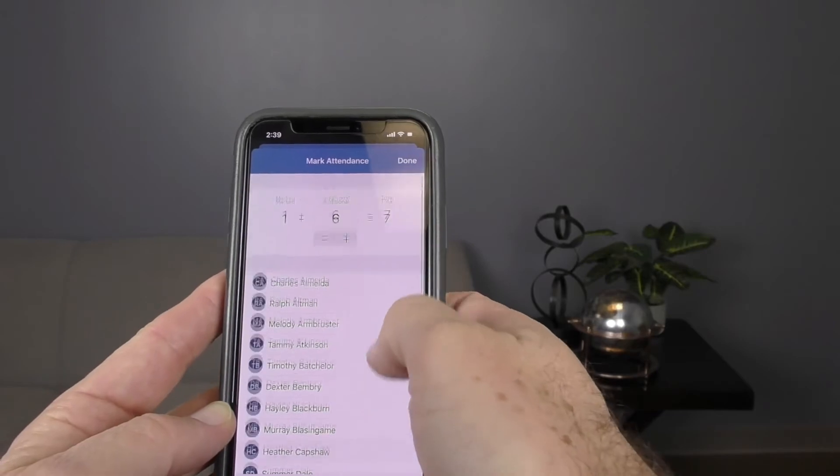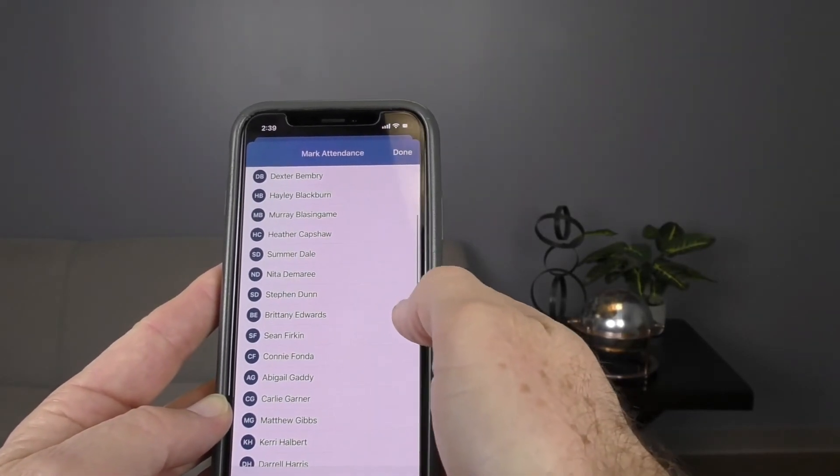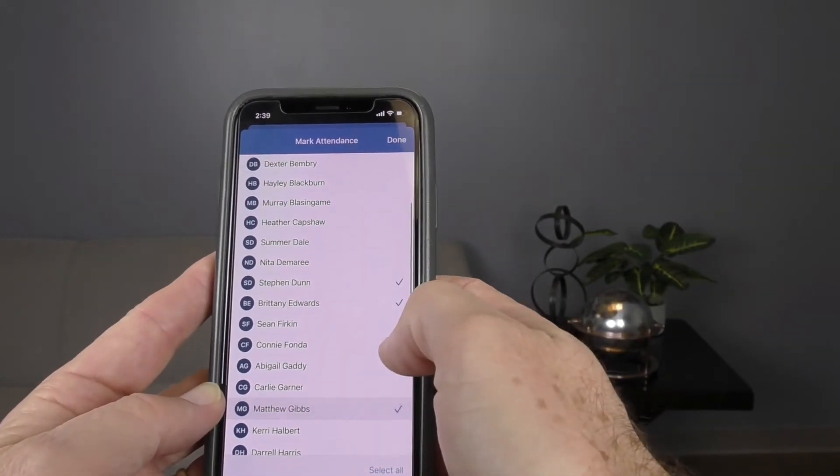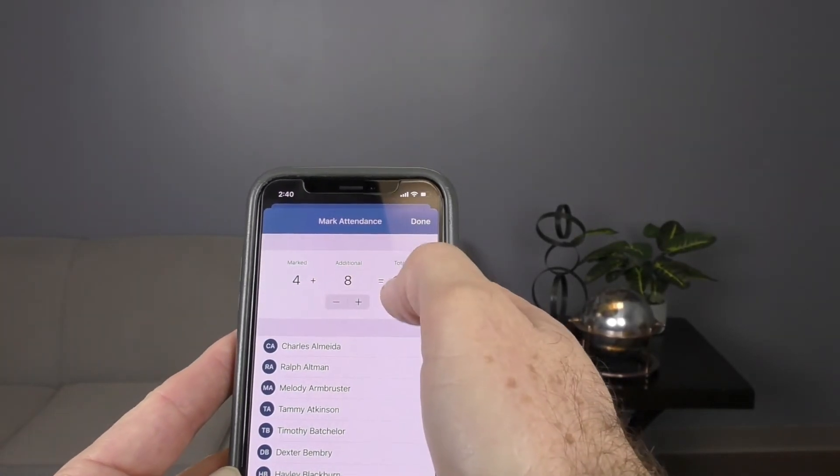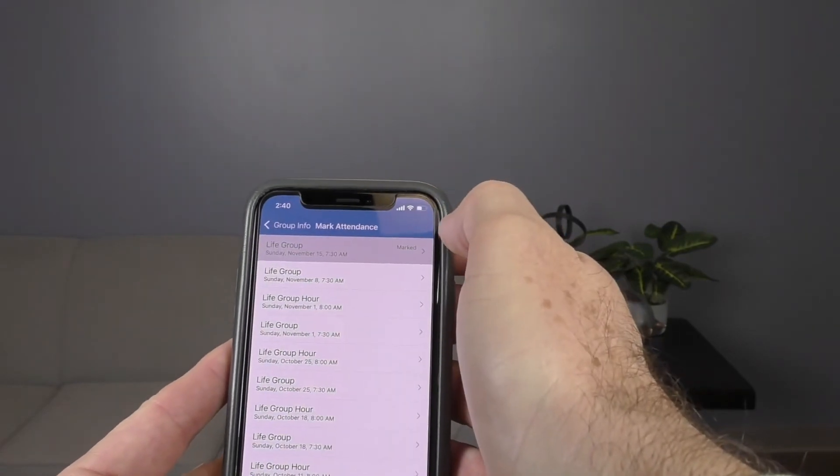I'm going to go to a Sunday—November 15th—and see what I put in is already there. But let's say I needed to change it, take somebody out or add somebody. You see how to do that: just check their name, and then any additional visitors you add them, and simply hit 'done.' That's all you have to do. You're finished once you do that.